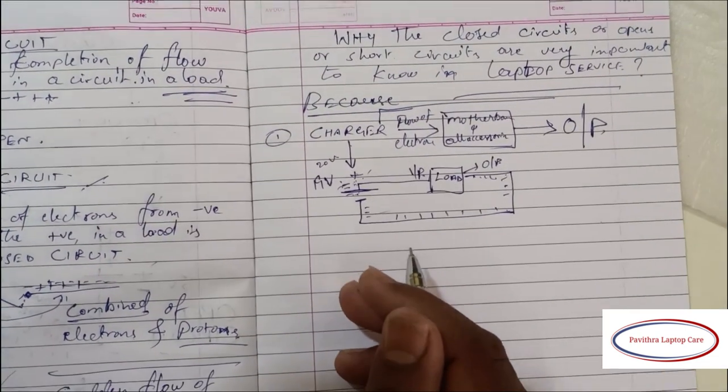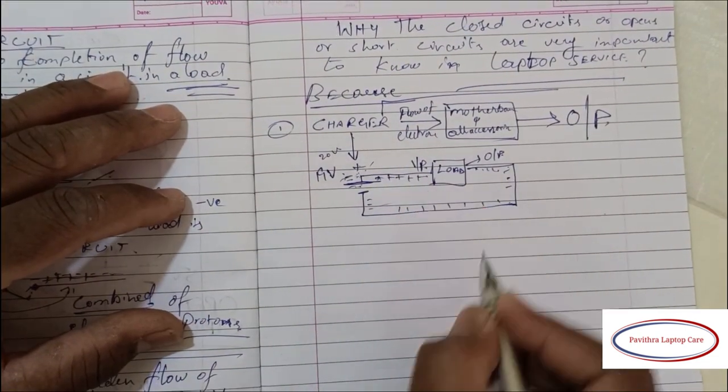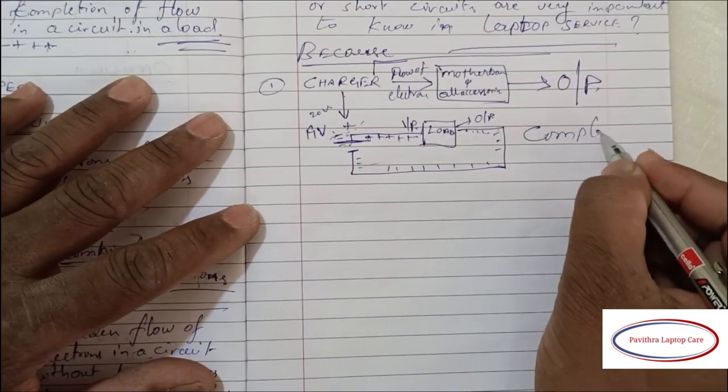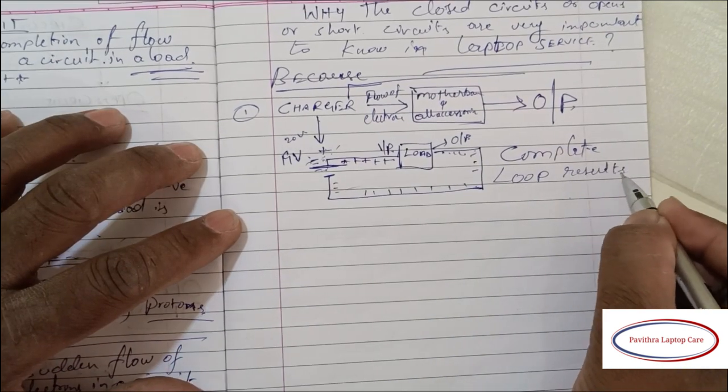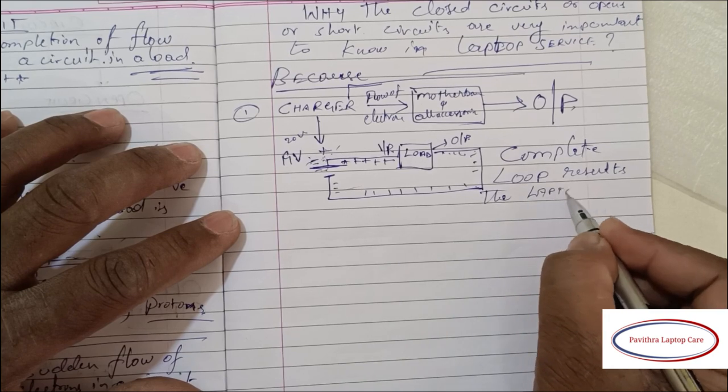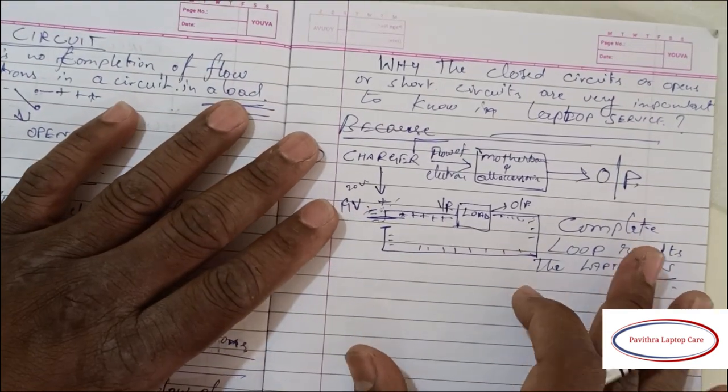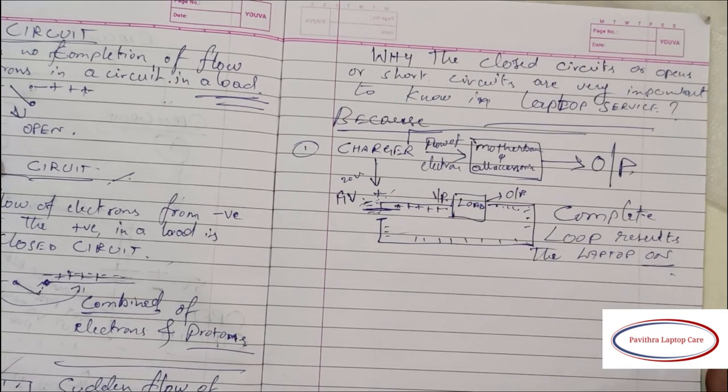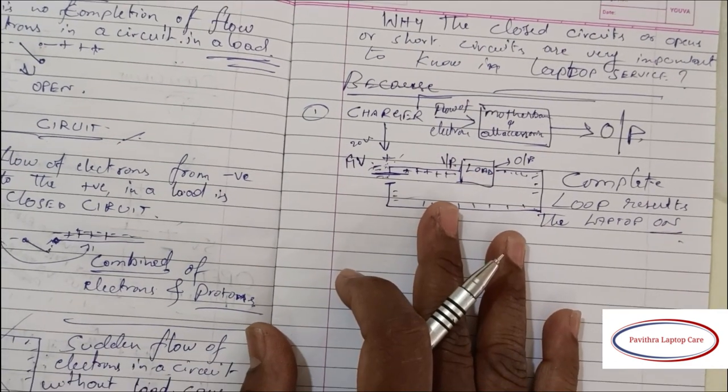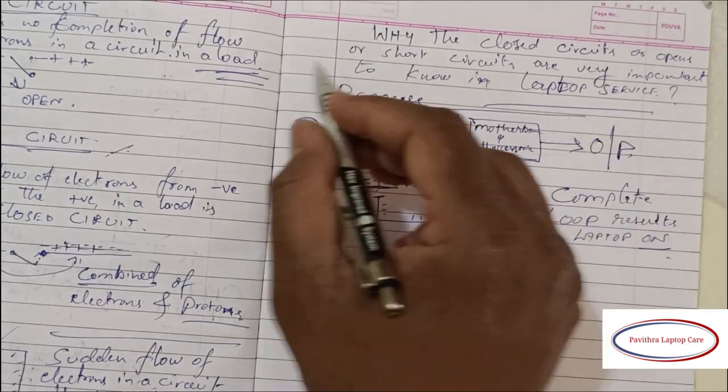See, this is called complete circuit. Here the flow of electrons from negative terminal to positive terminal flows through the load, through the laptop. So it gives the result—the output. This is a very simple topic: circuits.